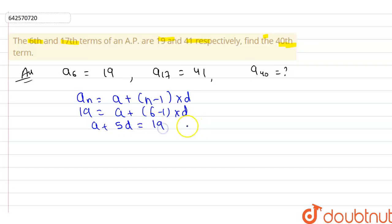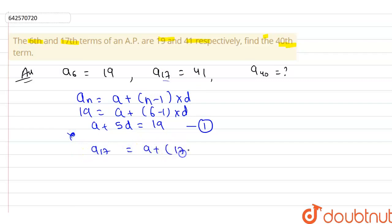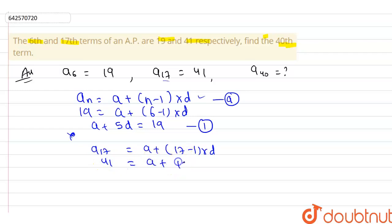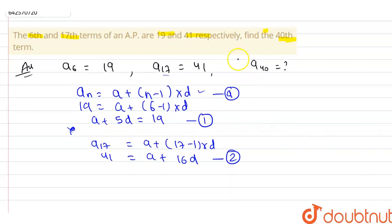Let's call that equation number one. Similarly, for the 17th term: a₁₇ = a + (17 − 1)d. The 17th term is given as 41, so 41 = a + 16d. Let's call this equation number two.